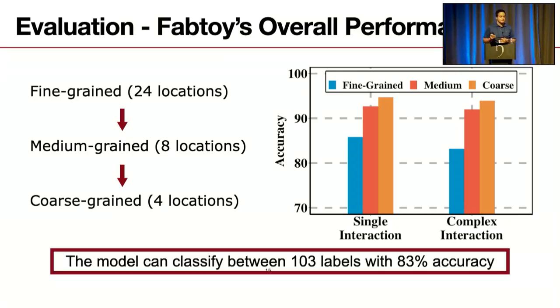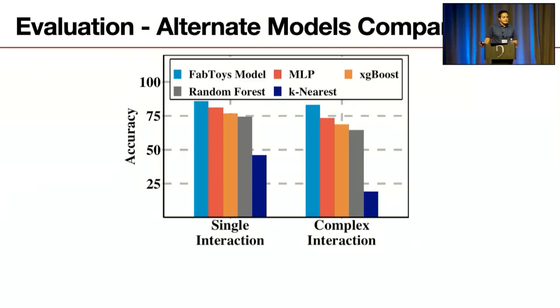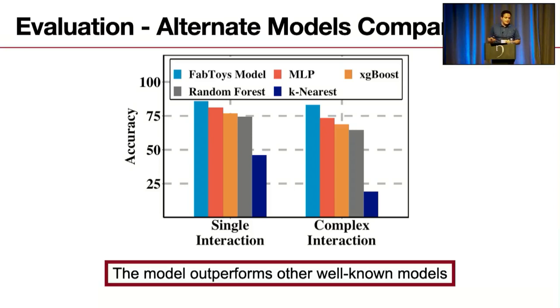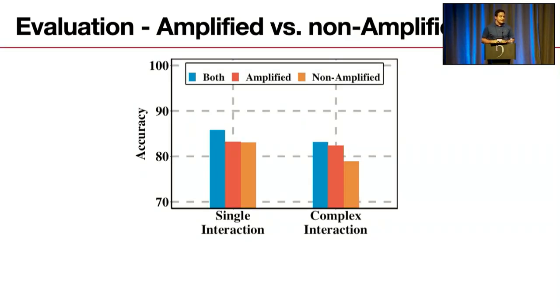The next evaluation is comparing our model in Fabtoy with alternate models. We compared the model we use in Fabtoy with MLP, XGBoost, Random Forest, and K-Nearest Neighbor. As you can see, the model outperforms the well-known models. The next evaluation I want to show you is the amplified versus non-amplified version, which is basically telling us was it really necessary to have amplified version as well. The answer is yeah. If you count five percent effective, we increased five percent accuracy by merging the amplified and non-amplified information.